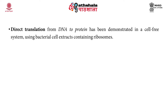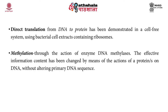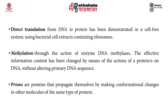The second type of transfer in the mechanism scheme are special transfers, which occur only under specific conditions. These include reverse transcription — the transfer of information from RNA to DNA — as seen in retroviruses such as HIV, as well as in eukaryotes in cases of retrotransposons and telomere synthesis. Direct translation from DNA to protein has also been demonstrated in a cell-free system using bacterial extract containing ribosomes. Methylation through the action of enzyme DNA methylases is also considered a special transfer. Prions, which are proteins that propagate by making conformational changes in other molecules of the same protein type, are also examples of special transfers.